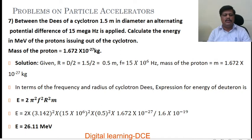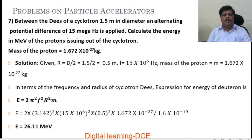So E equals 2 pi squared, F value, and radius value. Please note the radius is 0.75, not 0.5 — 7 is missed here. Substituting the value of mass and converting to electron volt by dividing by 1.6 into 10 power minus 19, we directly get the energy value in electron volt as 26.11 MeV.